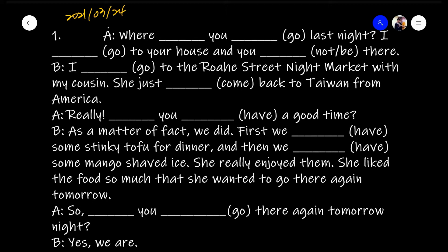I say, 'Where you go last night?' Find the time marker. The time marker is right over here. So when you see that, you know you have to use the past tense. And this is a question, so you have to look for the action verb in the sentence. The action verb is here. When there is an action verb in a sentence, you know that you have to use a helping verb. What is the helping verb that you use in the past tense? Did.